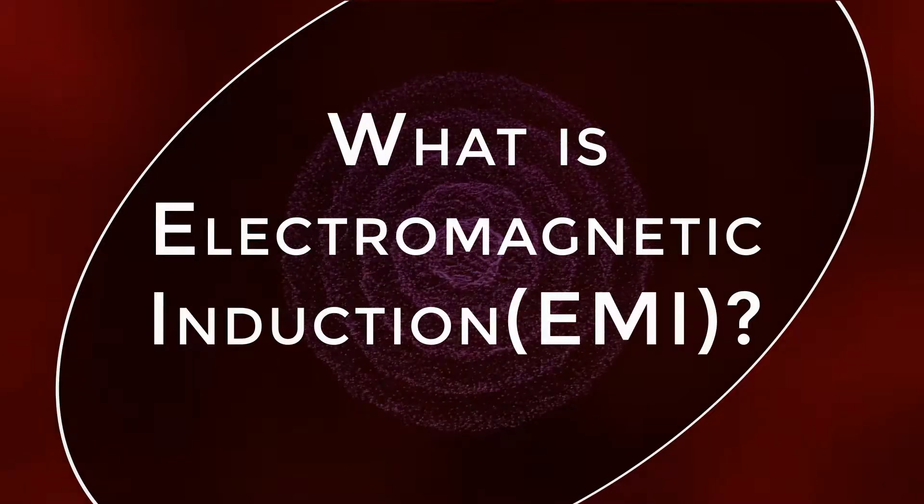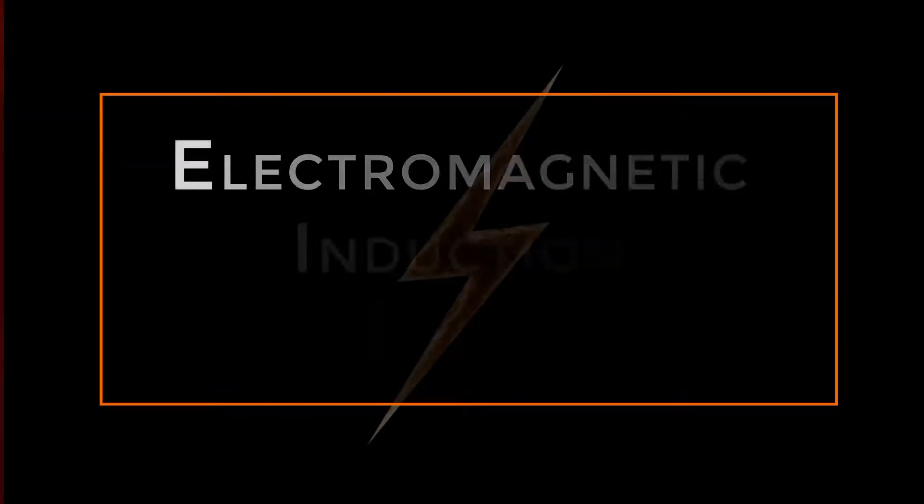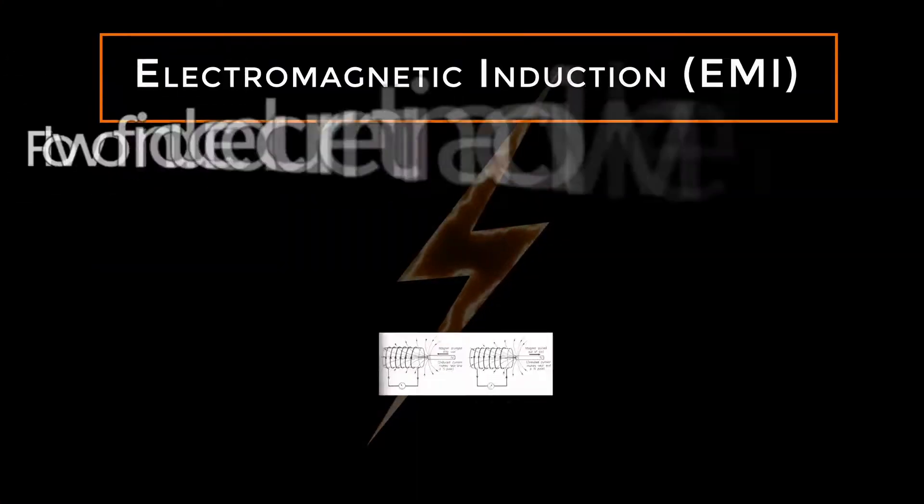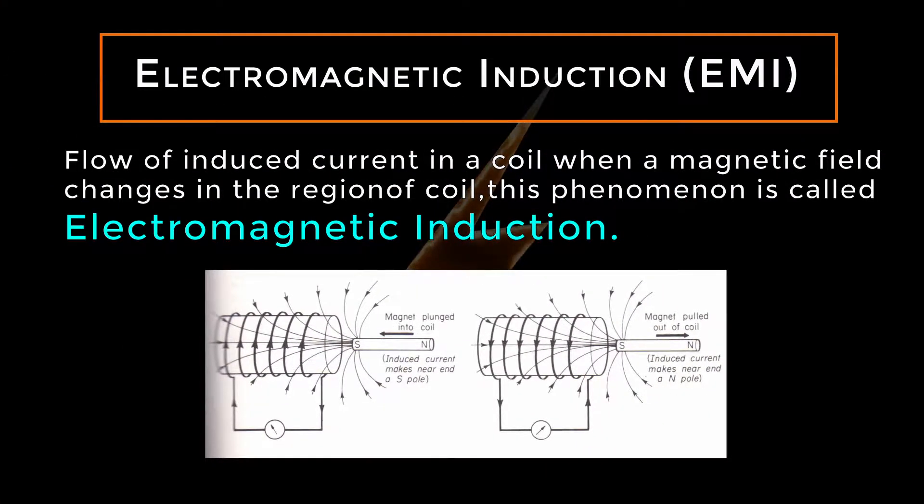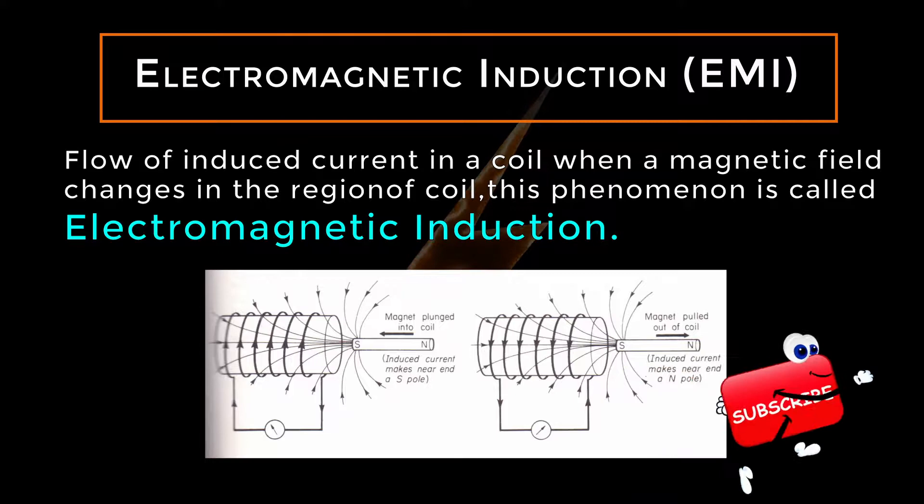What is electromagnetic induction EMI? Electromagnetic induction is the flow of induced current in a coil when a magnetic field changes in the region of the coil. This phenomenon is called electromagnetic induction.